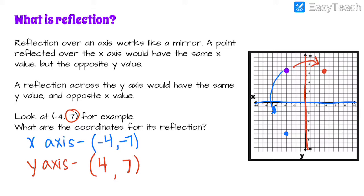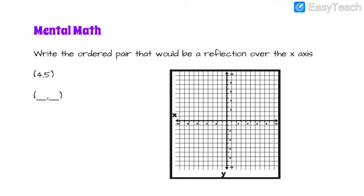Alright, so that's what our mental math is going to be on today. Write the ordered pair that would be a reflection over the x-axis for the point 4, 5. I'm going to go to the right 4 and up 5 — and there it is. Go ahead and pause the video and write what the reflection would be. Hopefully you noticed that the x value stays the same — it would still be 4 — and instead of going up 5, you would be going down 5, so negative 5 would be your y value.